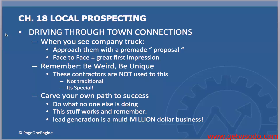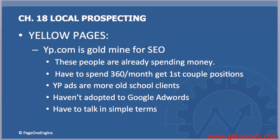For the yellow pages, everyone goes to yp.com — it's a gold mine for SEO prospecting. The people there are already spending money, placing ads on the yellow page website to get leads. Many are spending about 350 dollars a month for top ad positions. Yellow page ads are old-school, and these clients will be more difficult to convert, but if you present it correctly it can work out great. Many haven't adopted Google AdWords — just talk to them in simple terms and tell them how you can get leads to them right away.